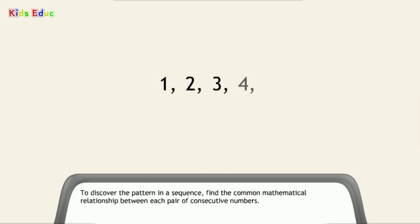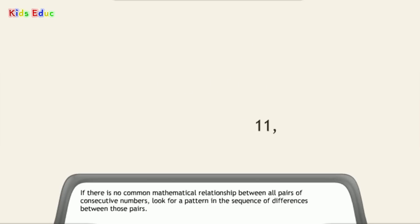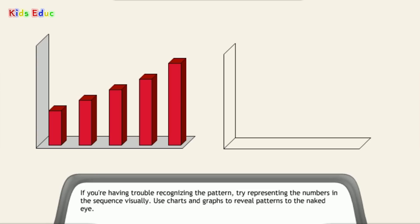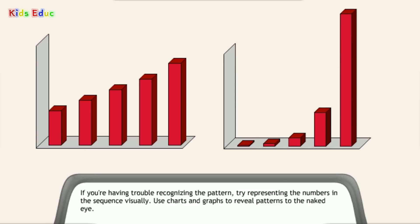To discover the pattern in a sequence, find the common mathematical relationship between each pair of consecutive numbers. If there is no common mathematical relationship between all pairs of consecutive numbers, look for a pattern in the sequence of differences between those pairs. If you're having trouble recognizing the pattern, try representing the numbers in the sequence visually. Use charts and graphs to reveal patterns to the naked eye.